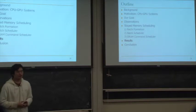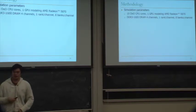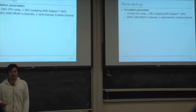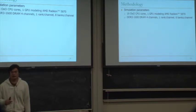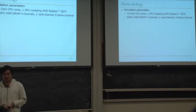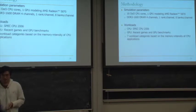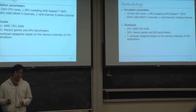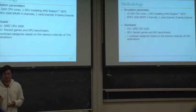We perform simulation using a cycle-level simulator modeling 16 out-of-order CPU cores, one GPU modeling the AMD Radeon 5870, and main memory using DDR3-1600 DRAM with four channels, one rank per channel, and eight banks per channel. We use SPEC 2006 for CPU workloads and recent games and GPU benchmarks for GPU workloads.